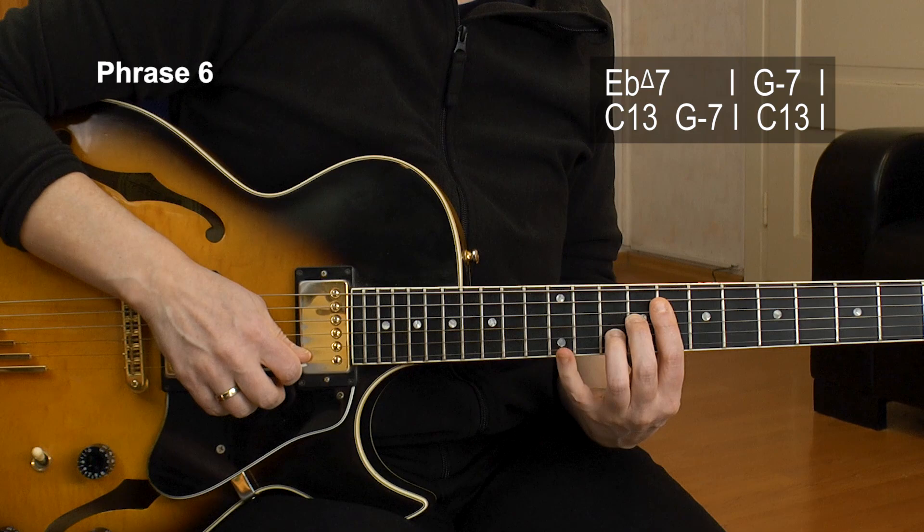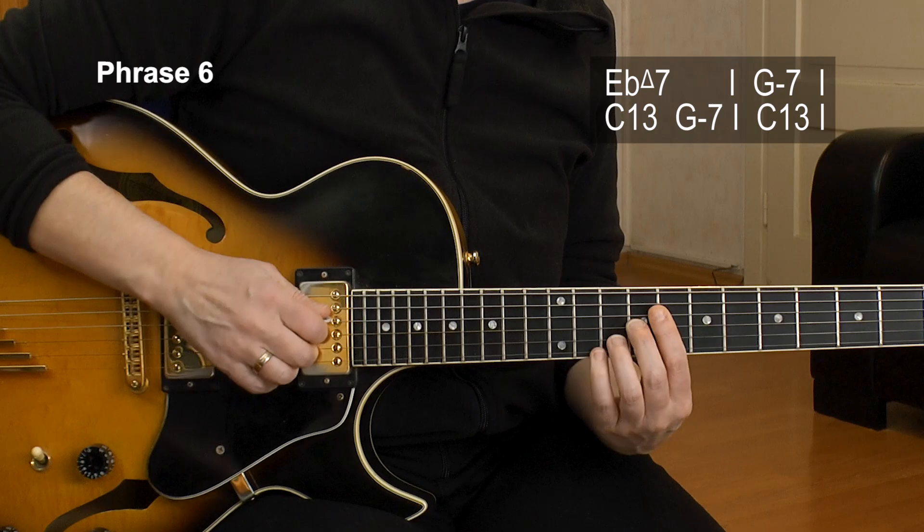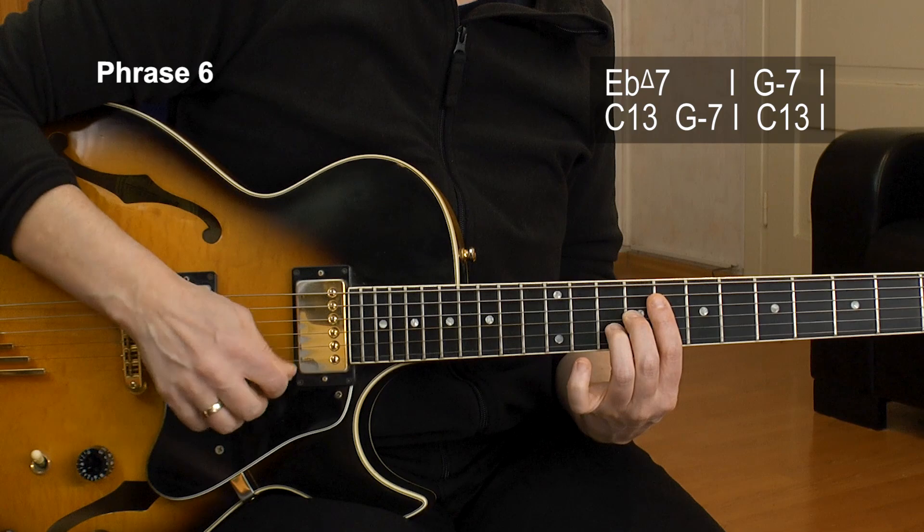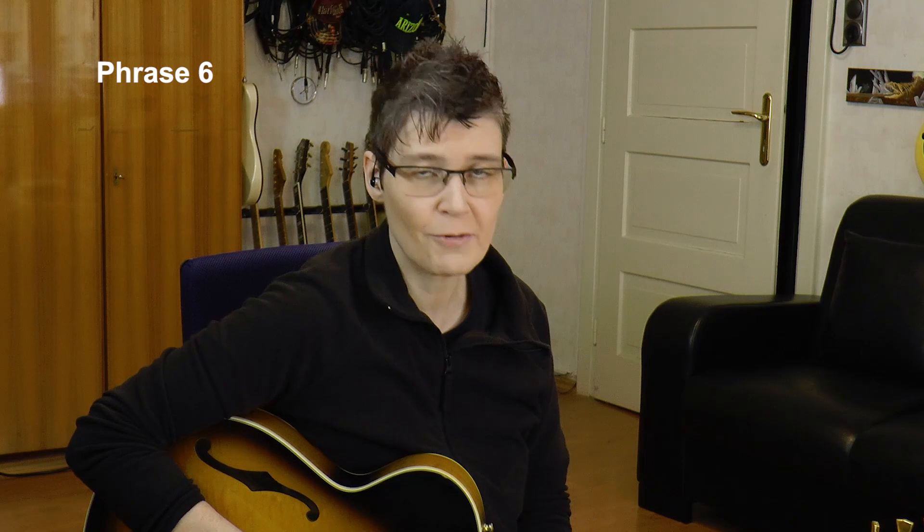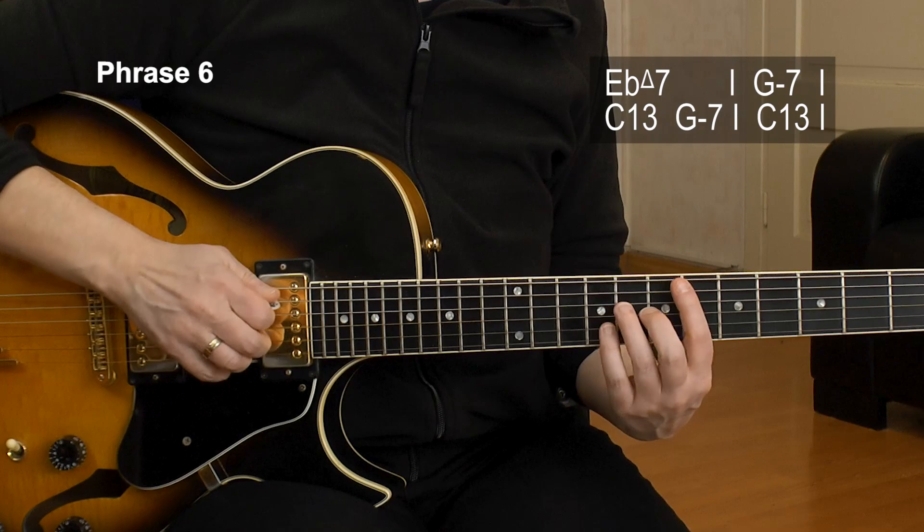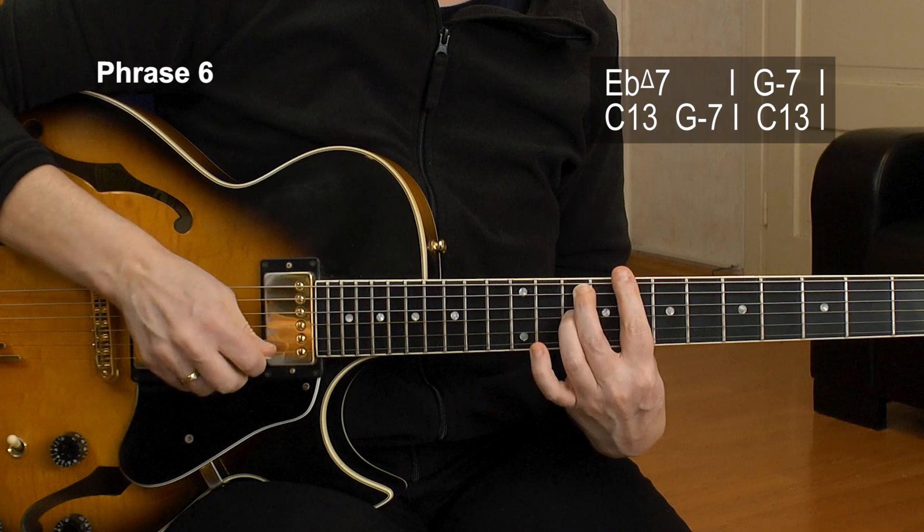Then back to that C13, 9. Then I lift my pinky and I bar that 8th fret of the E string. Play it. Play everything again with the pinky lifted off. Pinky goes to the 12th of the B string and back to the E string 8. Right? So this bar, last bar. Yeah, here we go. All right. And here's the entire phrase number 6 at slow tempo. 2, 3, 4.